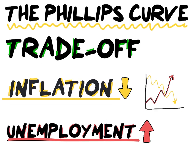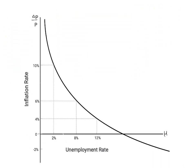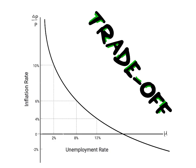This negative relationship can be illustrated on our Phillips curve. On our y-axis we will have our inflation rate, and on our x-axis we will have our unemployment rate, and here we have our downward sloping Phillips curve.